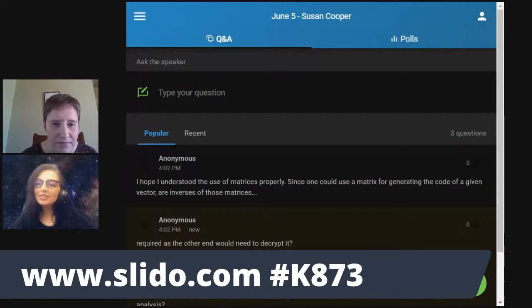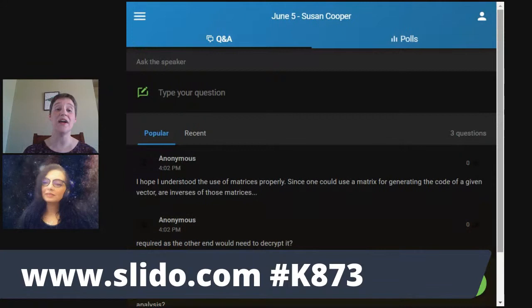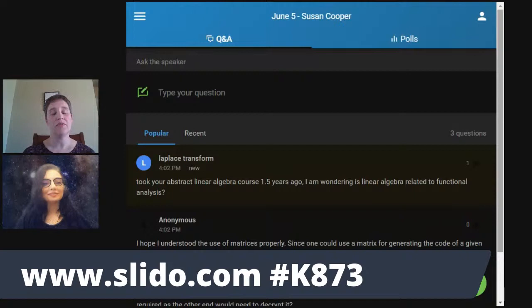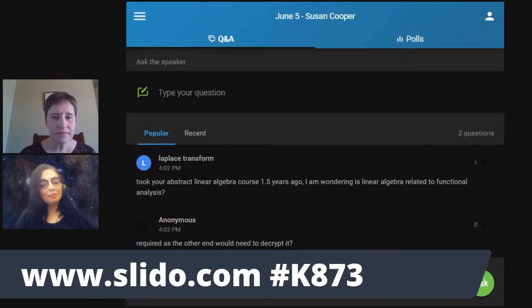Okay. Question. I hope I understood the use of matrices properly. Since one could use a matrix for generating the code of a given vector, are inverses of those matrices required as the other end would need to decrypt it? So, is it required? Certainly handy to have. So linear codes are not the most complex codes to be looking at, but if you start getting into things like RSA encryption and what the like, you're going to have to undo what you've done to encrypt the code. And so that is the idea of the inverse. Yes.